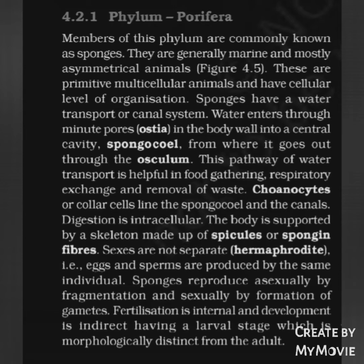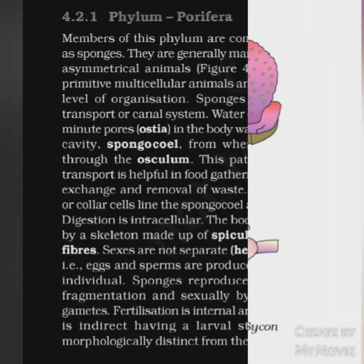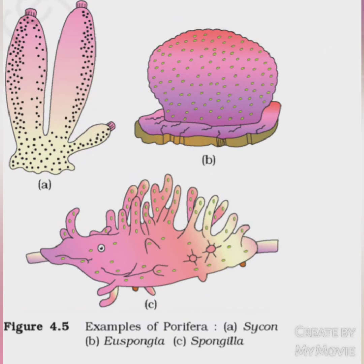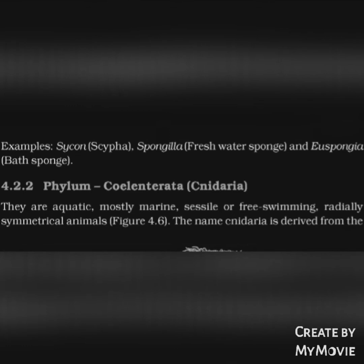Choanocytes or collar cells line the spongocoel and the canals. Digestion is intracellular. The body is supported by a skeleton made up of spicules or spongin fibers. Sexes are not separate, i.e., they are hermaphrodite — eggs and sperms are produced by the same individual. Sponges reproduce asexually by fragmentation and sexually by formation of gametes. Fertilization is internal and development is indirect, having a larval stage morphologically distinct from the adult. Examples: Sycon, Euspongia, and Spongilla (freshwater sponge).